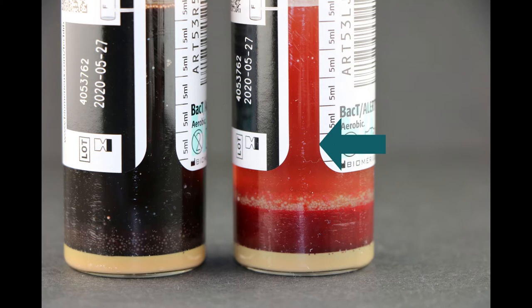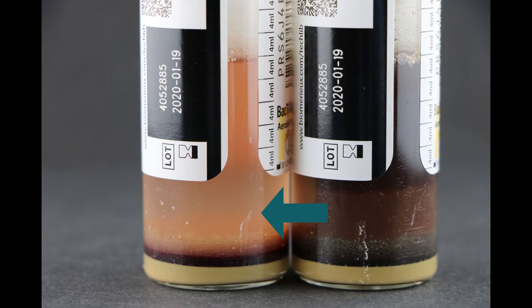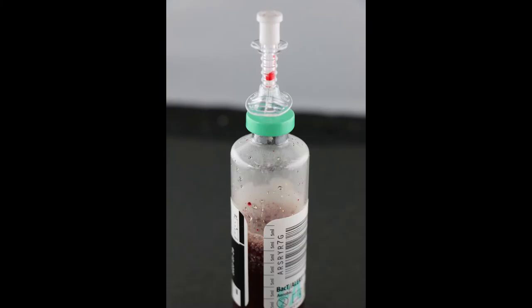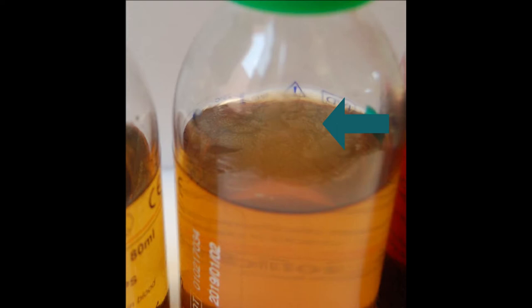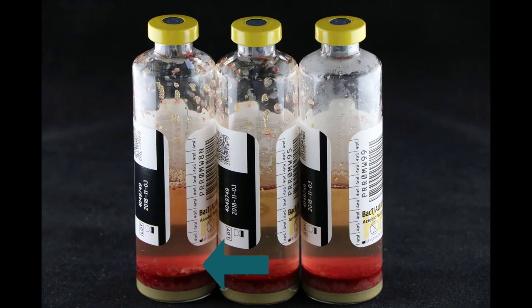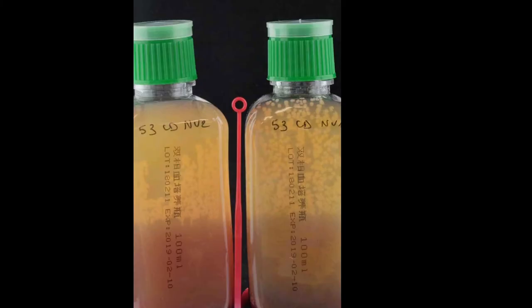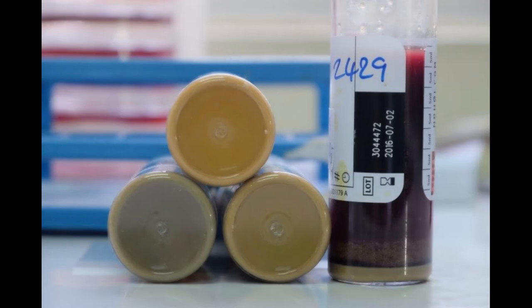Signs of growth are turbidity, hemolysis, color changes in the medium, gas production, pellicle or film formation, visible colonies like puffballs. In case of biphasic bottles, you can also see colony growth on the solid agar.